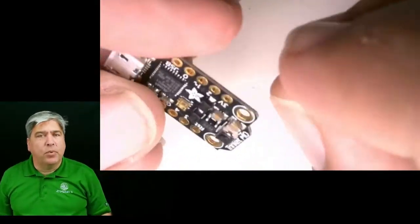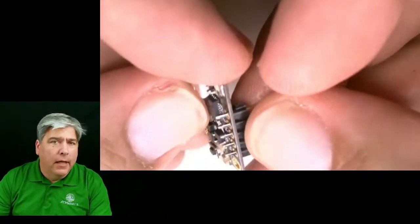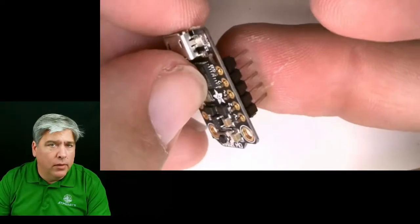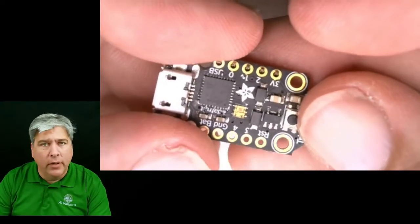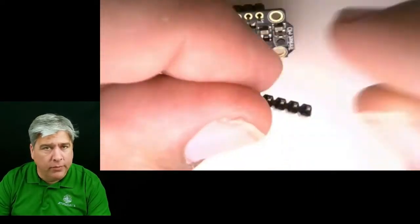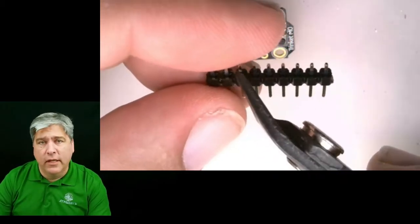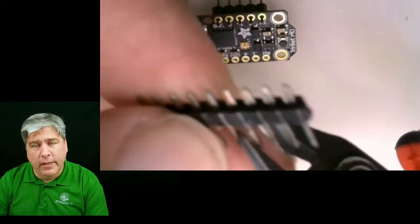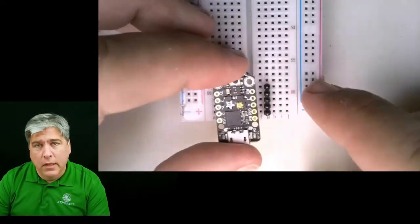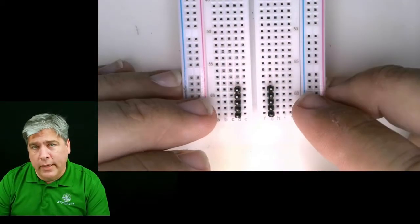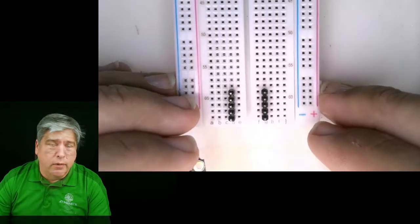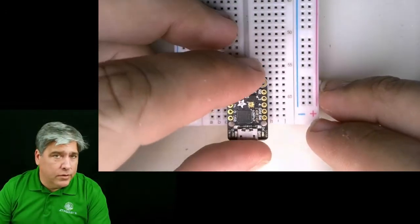Now, as far as assembling these, it's pretty straightforward. Just like the originals, whenever you're using a trinket, you're going to get one that has a strip of headers that comes with it. You need to cut those to length, five per side, and have them ready to insert. Then you will place them into a solderless breadboard right on the end. Make sure they line up and that they're straight. And then solder them down one side, turn it around, solder it down the other.